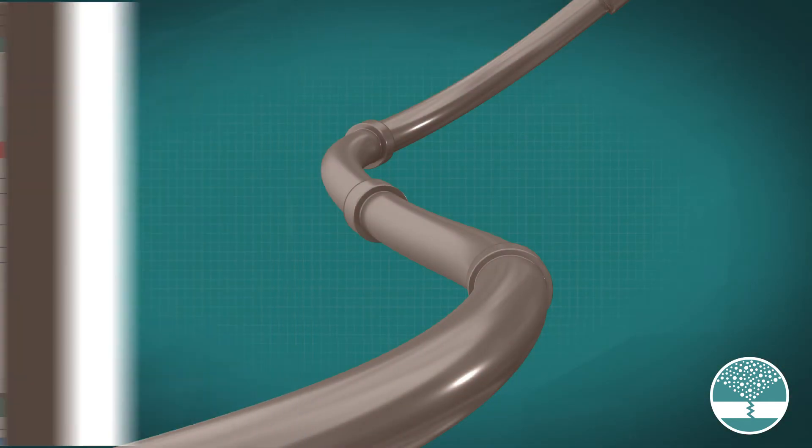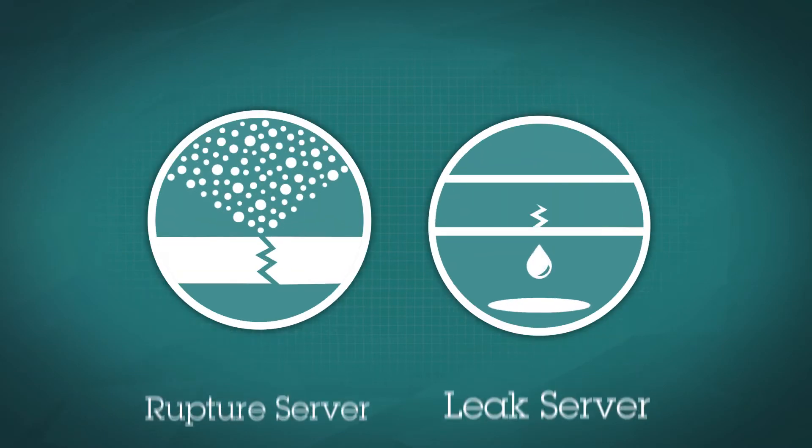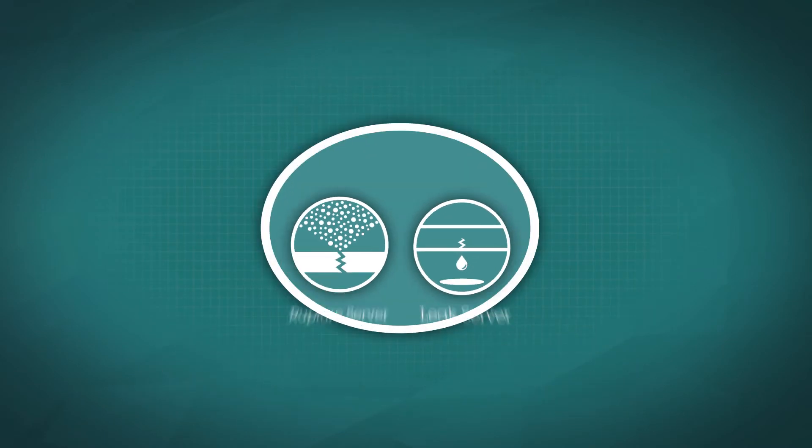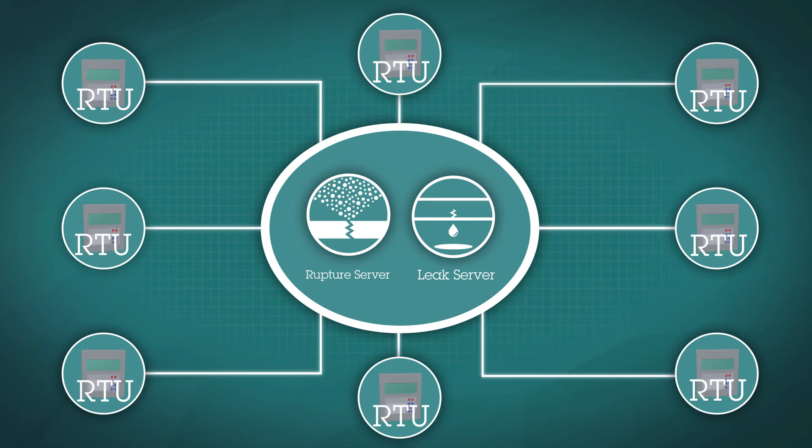The rupture detector can access the SCADA, the DCS, or the RTUs to collect data needed for rupture detection from the pipeline instrumentation.